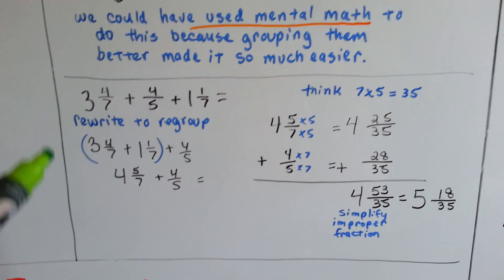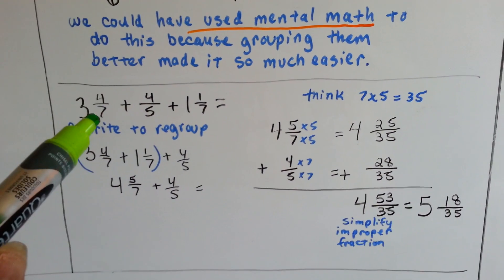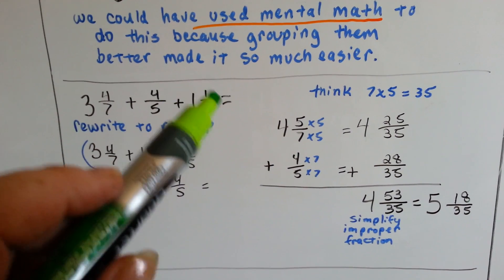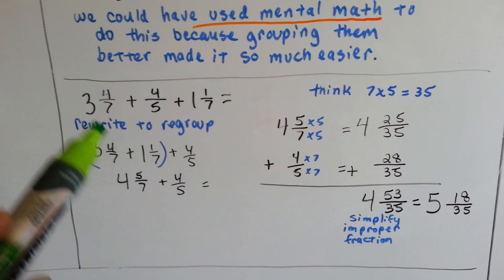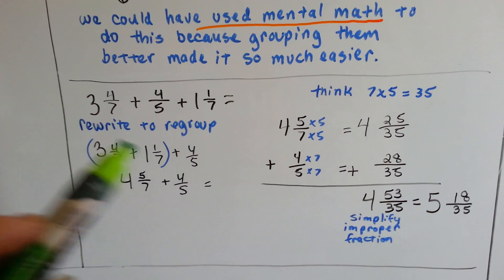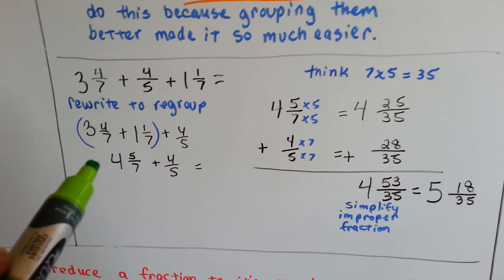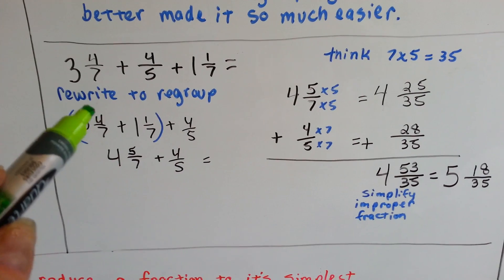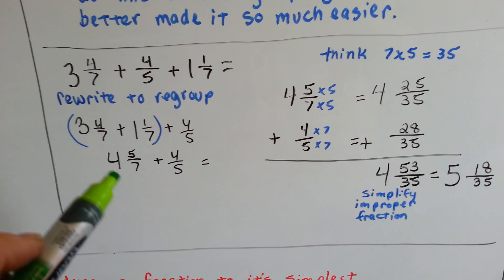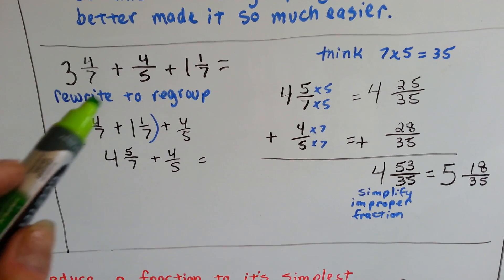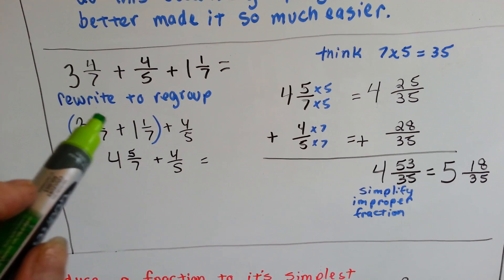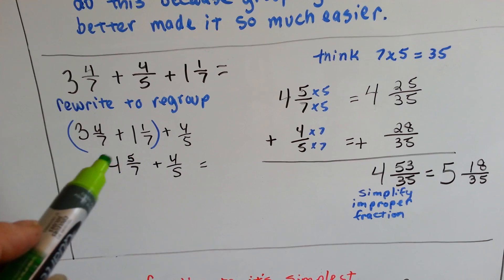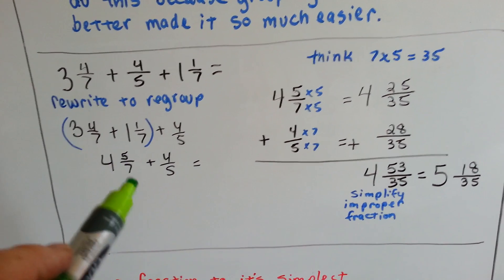Let's take a look at this one. We have 3 and 4 sevenths plus 4 fifths plus 1 and 1 seventh. So we'll rewrite and regroup the sevenths to be together. We add 3 and 4 sevenths to 1 and 1 seventh. 3 and 1 is 4; the 4 and 1 numerators make 5, so we have 4 and 5 sevenths.